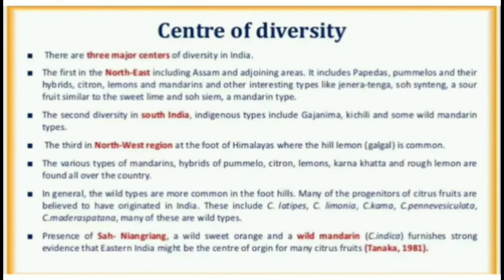The third centre is in the northwest region at the foot of the Himalayas where the Hill Lemon is common. The various types of mandarins, hybrids of pomelo, citron, lemons, Karnakhatta and rough lemon are found all over the country. In general, the wild types are more common in the foothills.